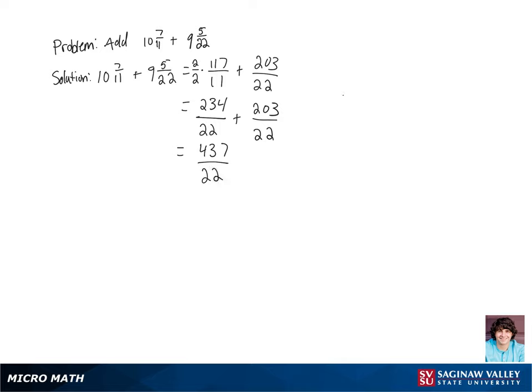Now we're going to rewrite this fraction as a mixed number, so let's do long division. Let's do 437 divided by 22. 22 goes into 43 once. Subtract 22 from 43 and we get 21. Drop the 7.